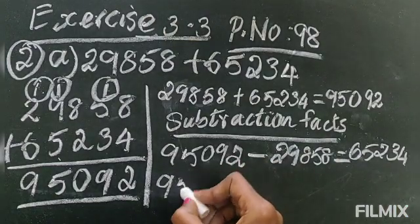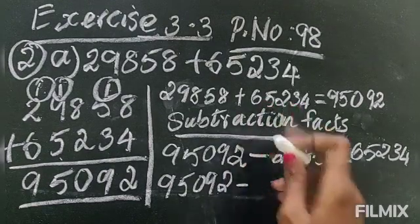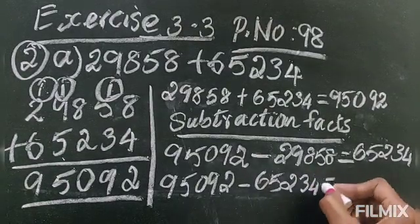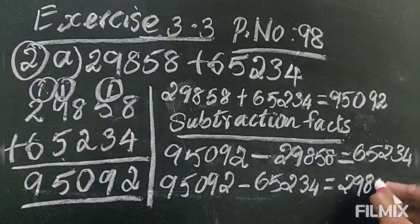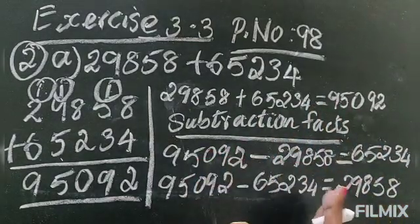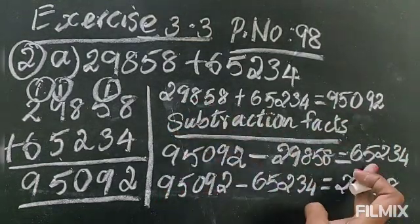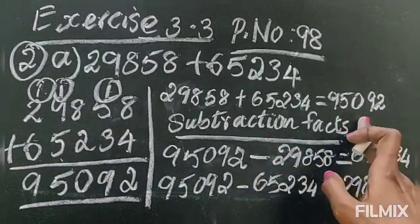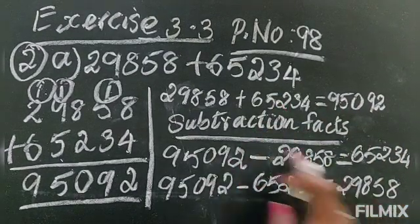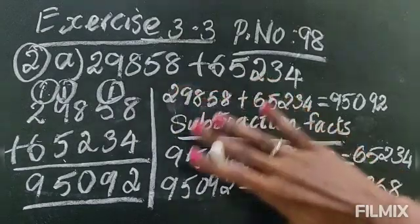Now the second fact — first write the sum, the bigger number: 95,092. From there, first we minused the first addend, now we will minus the second addend: 65,234. So the answer will be 29,858. Only these three numbers — you are just arranging them in different order. First write the bigger number, then minus the first addend, the answer will be the second addend. Then for the second subtraction fact, write the bigger number first, then minus the second addend, the answer will be the first addend.